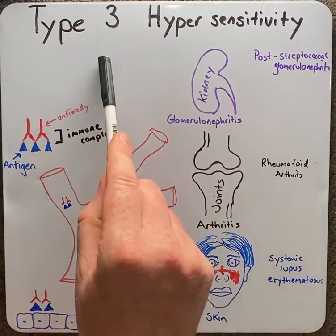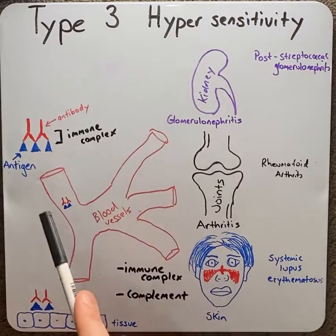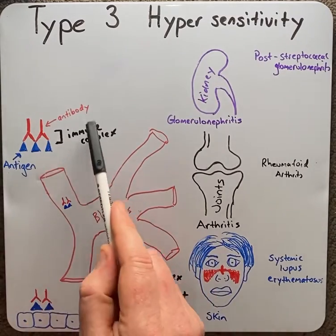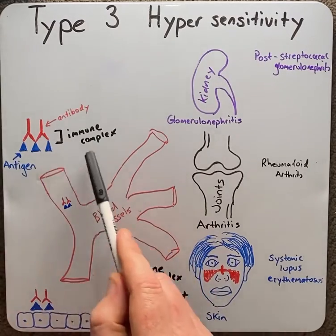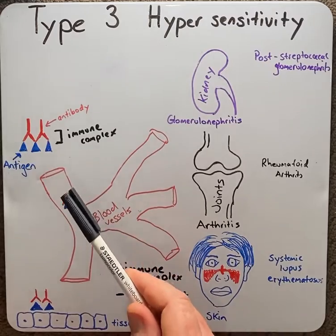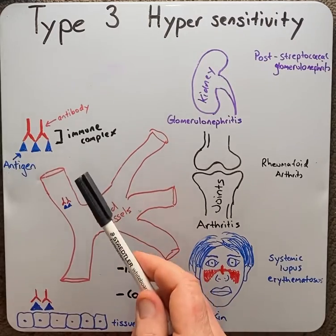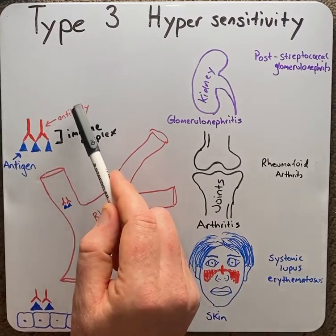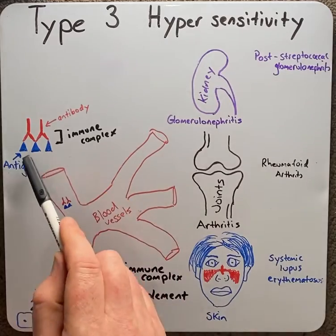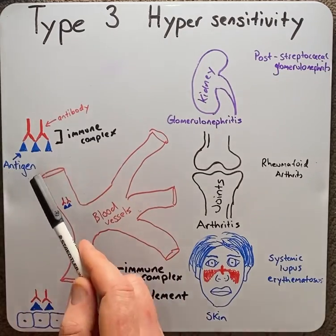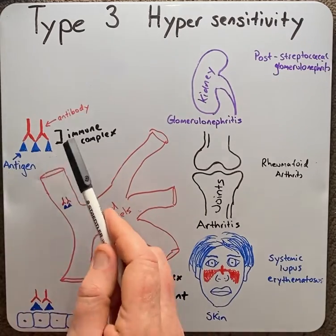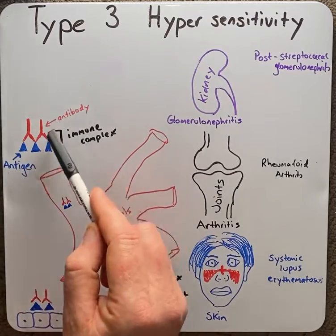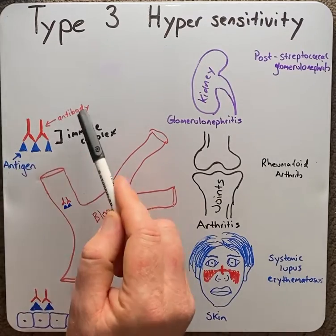Type III reactions are caused by an antigen-antibody reaction, which we call an immune complex. This is different to type I reactions where we saw fixed antibodies on mast cells and freely floating antigens, and type II reactions where we saw a fixed antigen on the cell and freely floating antibodies.